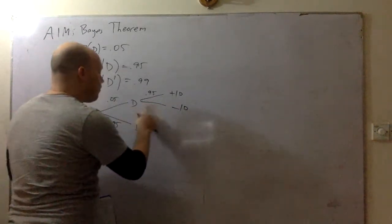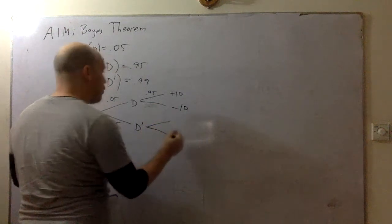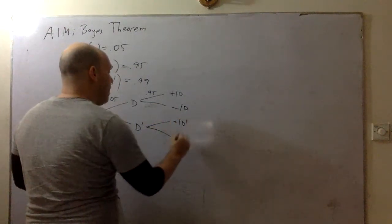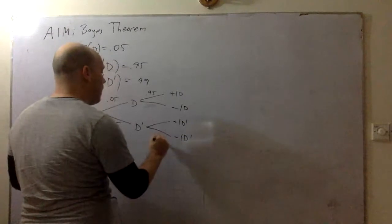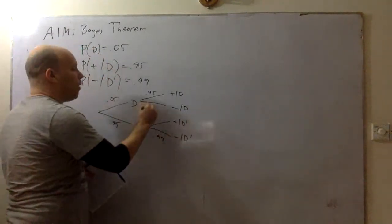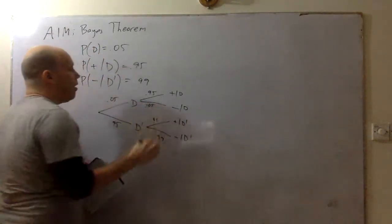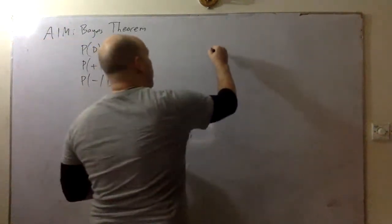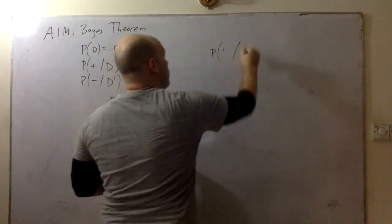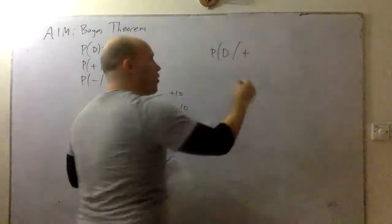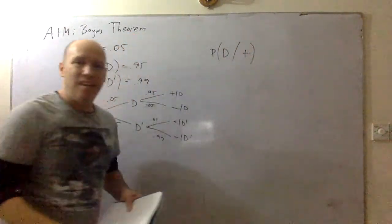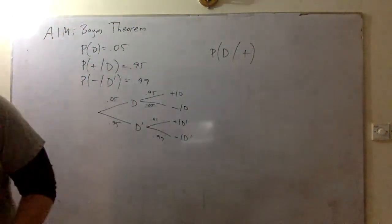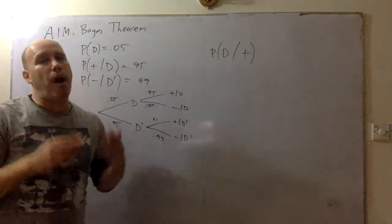We don't actually need that negative branch. We can do the other two branches here. If you're not diseased, this is 99% negative — we know that this is 0.05 positive and 0.01 for the other branch. The question you're going to be asked is: what is the probability, given that you tested positive, that you actually had the disease? That's kind of weird, but this shows up with false positives.